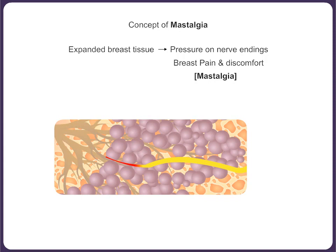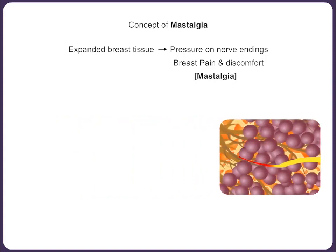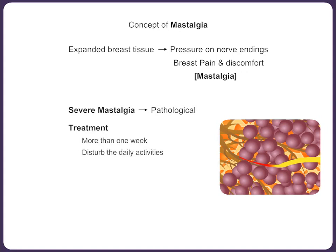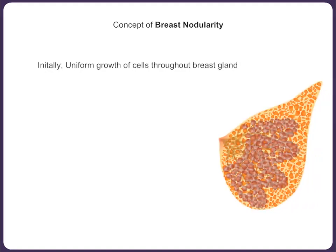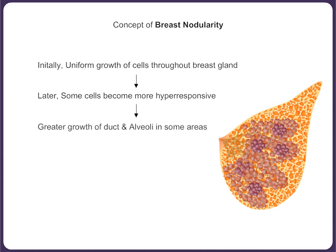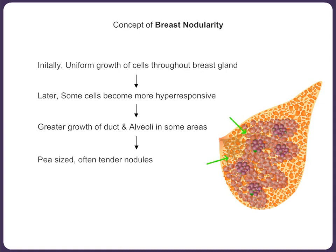To some degree, this nostalgia is a normal physiological response. However, when it becomes severe and lasts for more than a week, disturbing the activities of daily life, we need to consider it as pathological and treat it. Initially, in most women, there is a uniform growth of cells throughout the breast. Later on, some cells become hyper-responsive to the hormones, resulting in more growth of the ducts and lobules in some areas, resulting in nodularity. If you examine a lady with nodularity in the premenstrual phase, you will encounter pea-sized, often tender nodules scattered throughout the breast with soft and supple breast tissue in between.